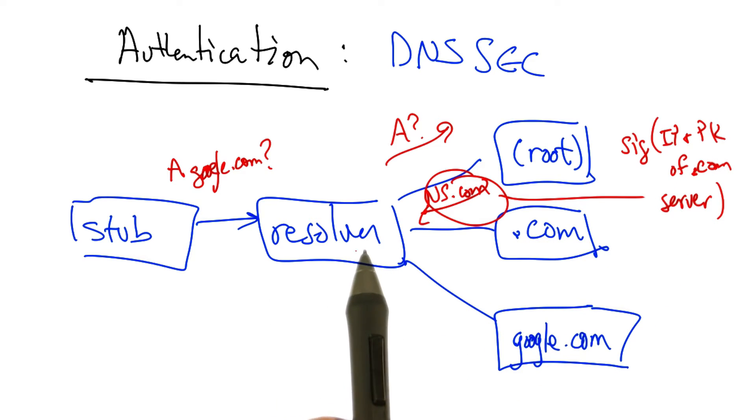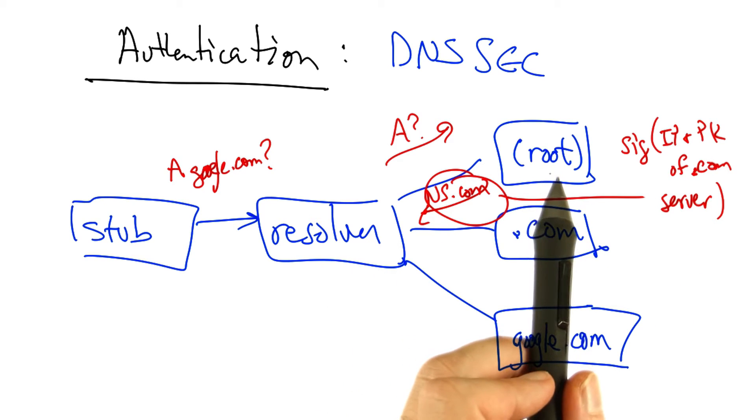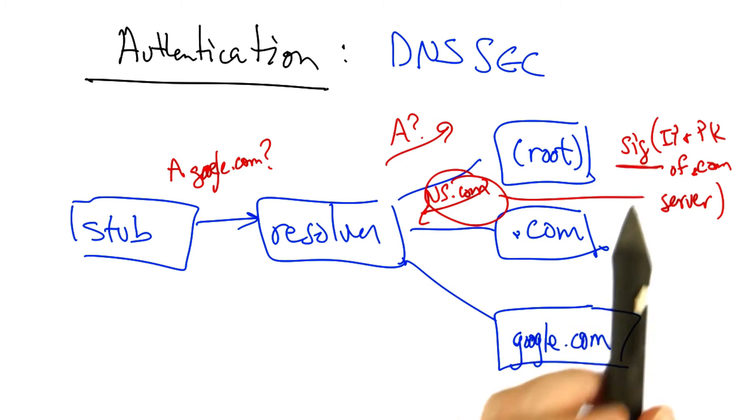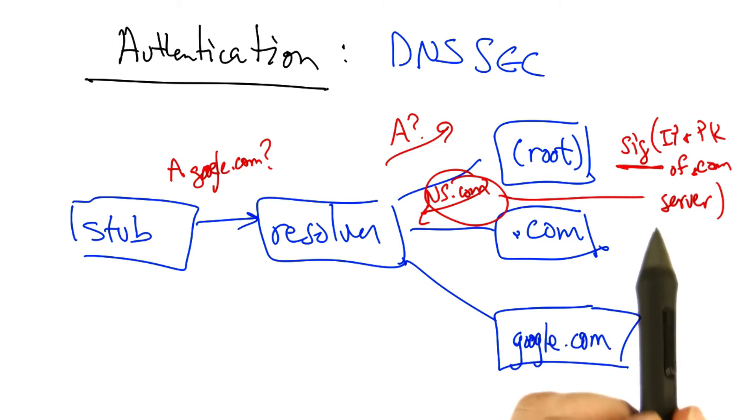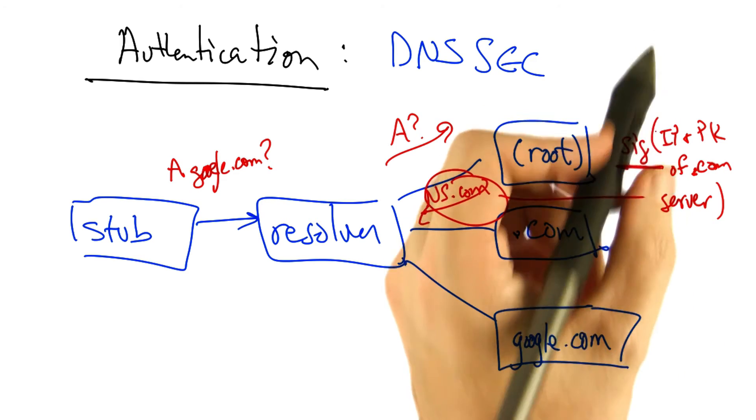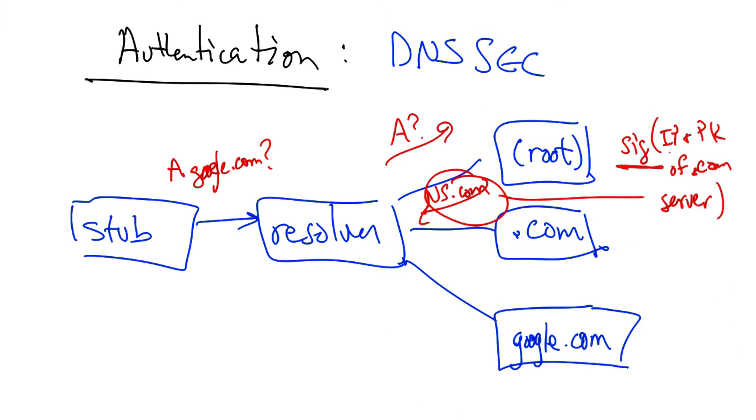As long as this resolver knows the public key corresponding to the root, it can check the signature, and it knows then that the referral is to the correct IP address for .com.